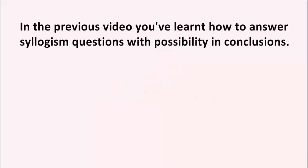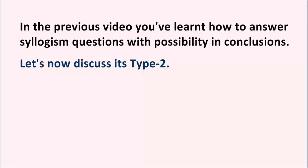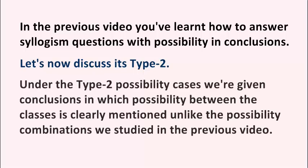Hello friends. In the previous video you have learnt how to answer syllogism questions with possibility and conclusions. Let's now discuss its type 2. Under the type 2 possibility cases, we are given conclusions in which possibility between the classes is clearly mentioned, unlike the possibility combinations we studied in the previous video.